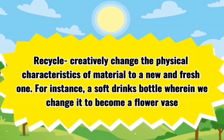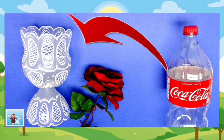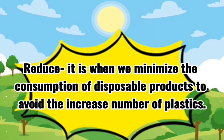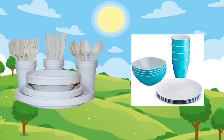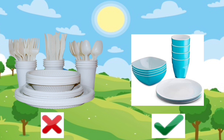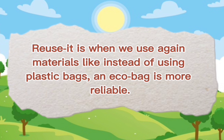First, recycle — it is when we creatively change the physical characteristics of a material to a new and fresh one. For instance, a soft drinks bottle, wherein we change it to become a flower vase. Second, reduce — it is when you minimize the consumption of disposable products to avoid increasing numbers of plastic materials. For example, instead of buying disposable plates and glasses, you choose to use washable plates and glasses. Next, reuse — it is when we use materials again; for instance, instead of using plastic bags, an eco-bag is more reliable.